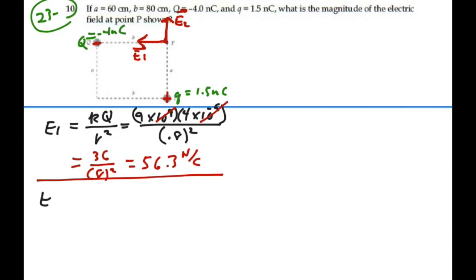If I look at E2, the magnitude of that field is K little Q over R squared, 9 times 10 to the 9, we have 1.5 nanocoulombs. And the distance between Q and that point is A, which is 0.6 meters squared. Now, again, the 10 to the 9 and the 10 to the minus 9 will cancel out.